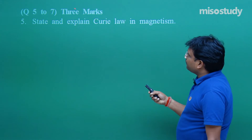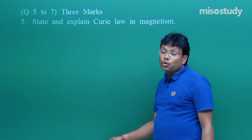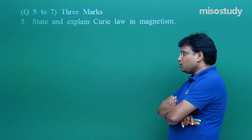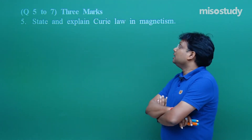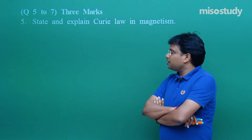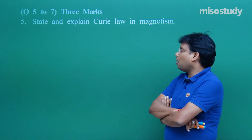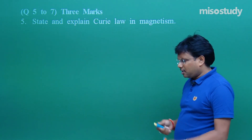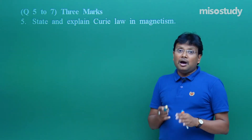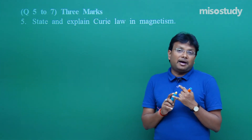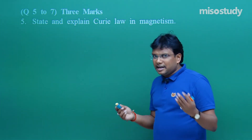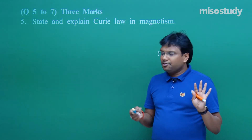Questions number 5 to 7 are each for 3 marks. Question 5: state and explain Curie Law in magnetism. If you are regularly watching the videos, this entire law is explained in the Hysteresis Curve video. Curie Law gives a relation between magnetization I, magnetic field B, and temperature T.